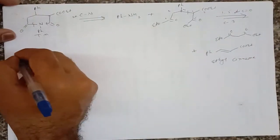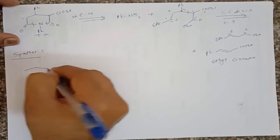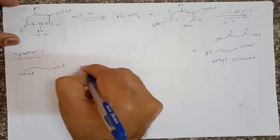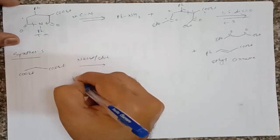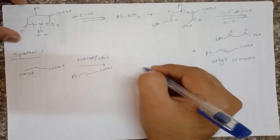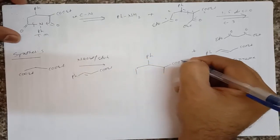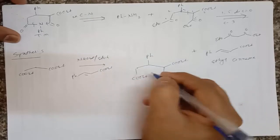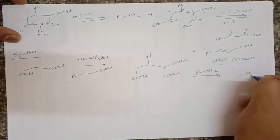In the synthesis, we can take this ester — COOEt/COOEt — and treat this molecule with a base, that is sodium ethoxide in the presence of ethanol, along with ethyl cinnamate (COOEt). This gives formation of a molecule with COOEt groups. We can then treat this molecule with PhNH₂, that is aniline, and it gives formation of the desired intermediate molecule.